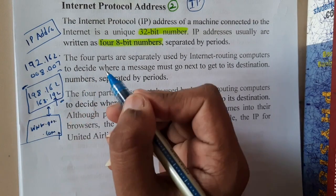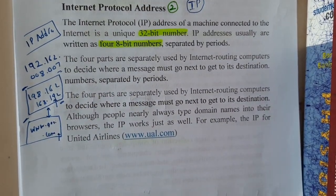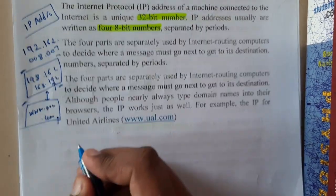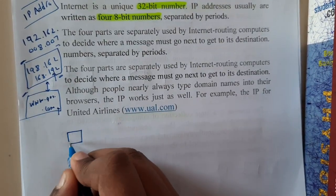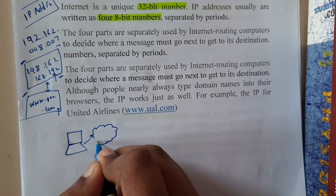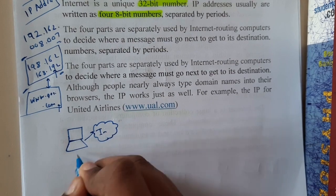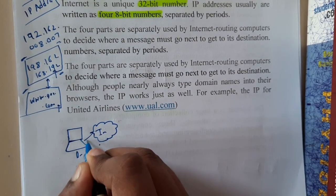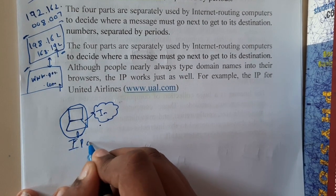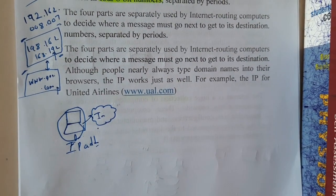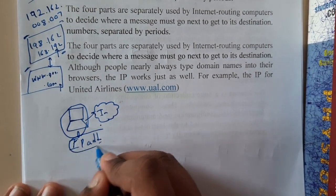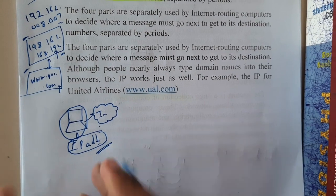Remembering numerical terms is really tough compared to text format. Basically, IP address is assigned whenever a particular device is connected to the internet - each device will be allocated an IP address. Even you watching this video on YouTube means your device is connected to the internet, so your mobile phone or PC will be having an IP address.